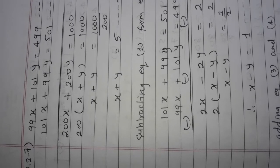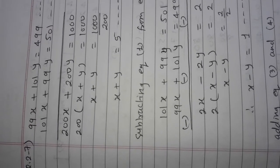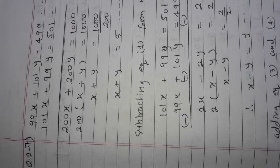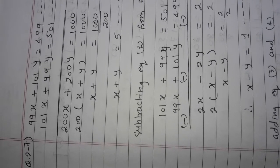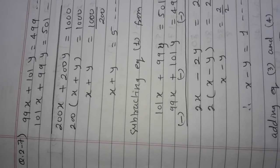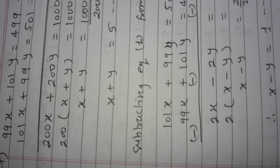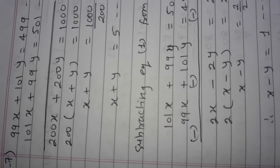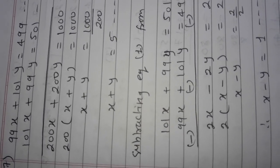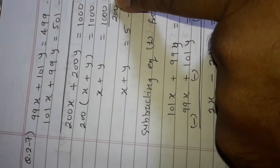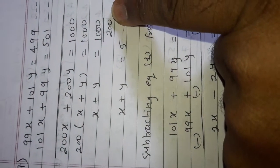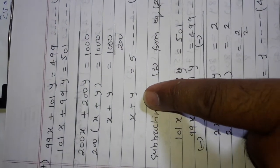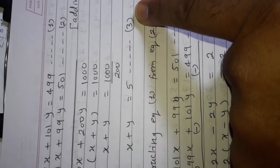First, we add equation number 1 and 2. 99x plus 101x gives 200x; 101y plus 99y gives 200y; 499 plus 501 gives 1000. Notice that 200 is common, so taking 200 common leaves x plus y, equal to 1000. Dividing both sides by 200 gives 1000 upon 200, which equals 5. So equation number 3 is x plus y is equal to 5.